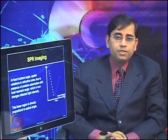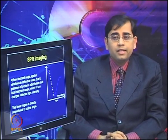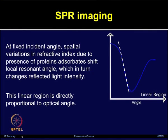At a fixed incident angle, the spatial variations in refractive index due to the presence of protein or other biomolecules printed on the surface cause the adsorbates to shift the local resonant angle, which in turn changes the reflected light intensity. The linear region of the SPR curve quantitatively correlates the changes in reflected light intensity with the amount of material present on the surface.